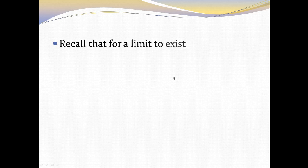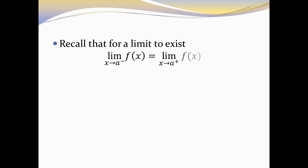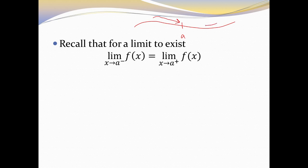A couple of things to remember from previous days. For a limit to exist, the following must be true: the limit as x goes to a from the left side is equal to the limit as x goes to a from the right side. Basically it means that my function — here is point a — the left side and the right side are all going towards the exact same point.